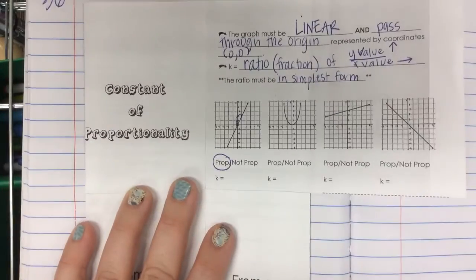Next one. Y equals 3X plus 4. Proportional or not proportional? Not proportional. Because there's a plus 4. We don't want any plus or minusing in our problem. Next one. Y equals 5 thirds X. Proportional. What's the K value? 5 over 3.